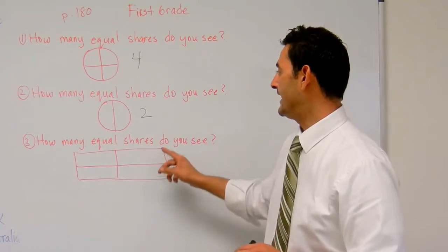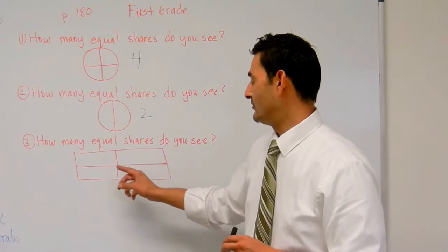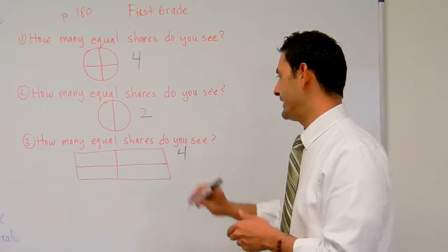And let's take a look at number three. This says, how many equal shares do you see in this rectangle? Here we have one, two, three, four. I've got four equal shares.